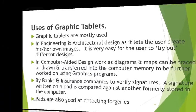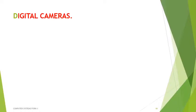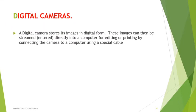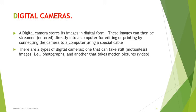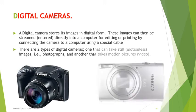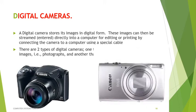A digital camera stores images in digital form. These images can be transferred directly into a computer for editing or printing by connecting the camera via a special cable. There are two types: those that take still images (photographs) and those that capture motion (video), with some capable of both.